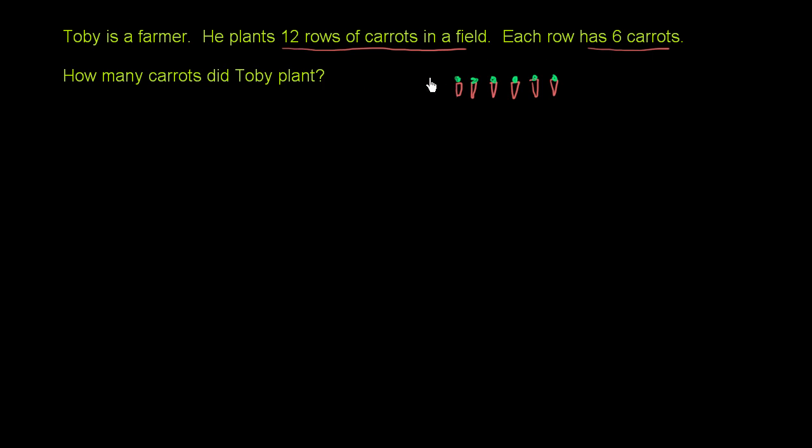Now, there are 12 of these. He plants 12 rows of carrots. Let me see if I can copy and paste this. So copy and paste. So that's 2 rows.